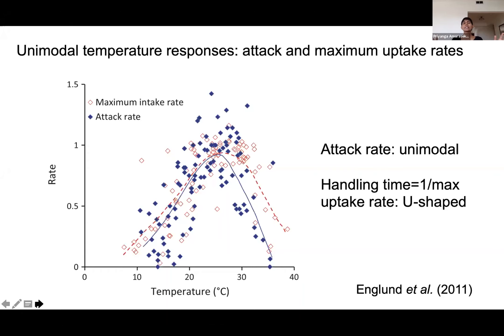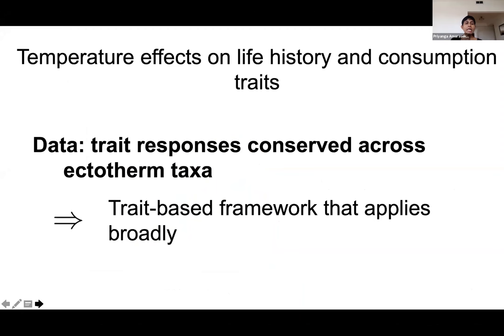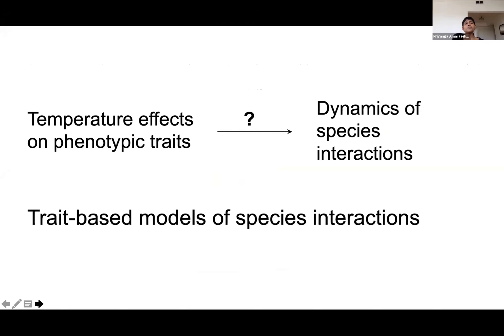There are many more examples from large numbers of ectotherm species — I've given you a representative sample. What this data suggests is that the qualitative nature of these trait responses appears to be conserved across different ectotherm taxa. This is encouraging because it suggests that we could develop a trait-based framework for understanding temperature effects that could apply broadly across different taxa. The key question is: how do temperature effects on these phenotypic traits translate into the dynamics of species interactions?